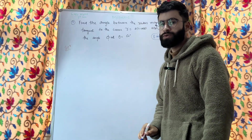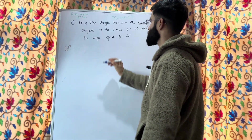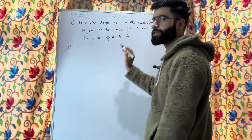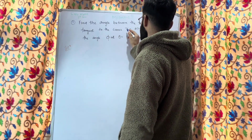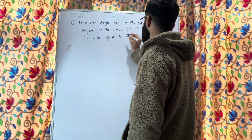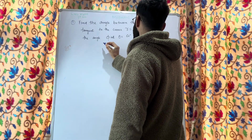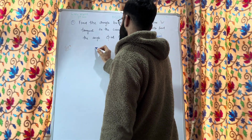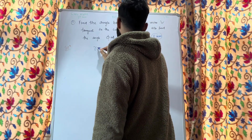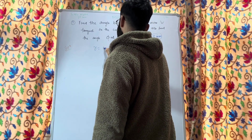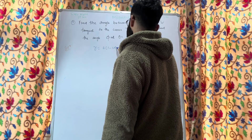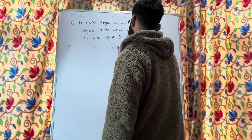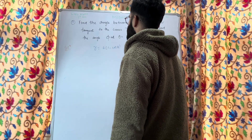First, let us solve the first part: find the angle between the radius vector and the tangent. Given: r = a(1 − cosθ).